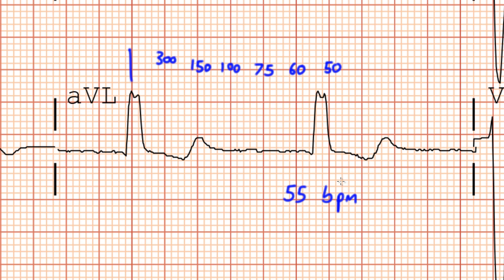If you want it to be even more precise, instead of taking the number 300 and dividing it by the number of large boxes between consecutive QRS complexes, you could take the number 1500 and divide it by the number of small boxes between consecutive QRS complexes.